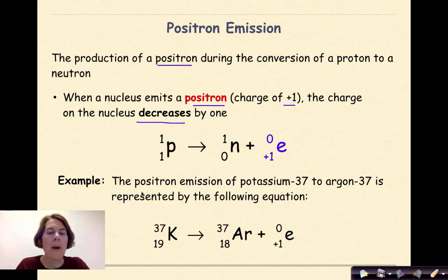Here's an example. The positron emission of potassium 37 to argon 37 is represented by the following equation. So I start out with potassium 37. I'm going to go to argon 37. Again, notice the mass numbers don't change. But my atomic number has gone down by 1. Because 18 plus 1 is 19.